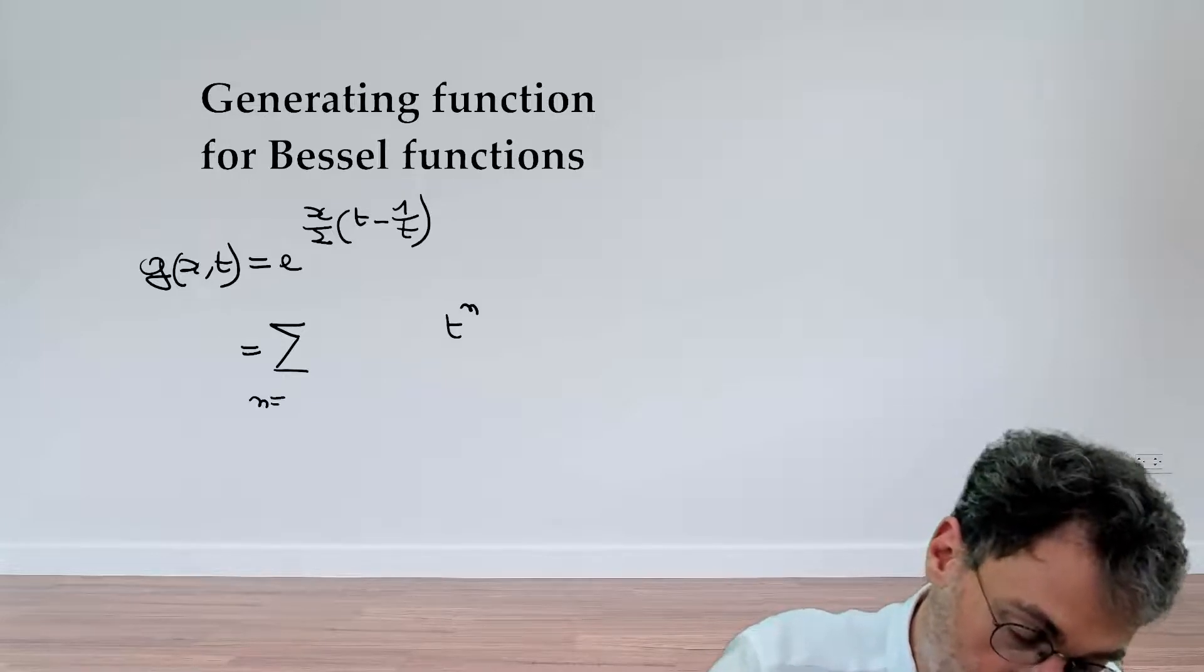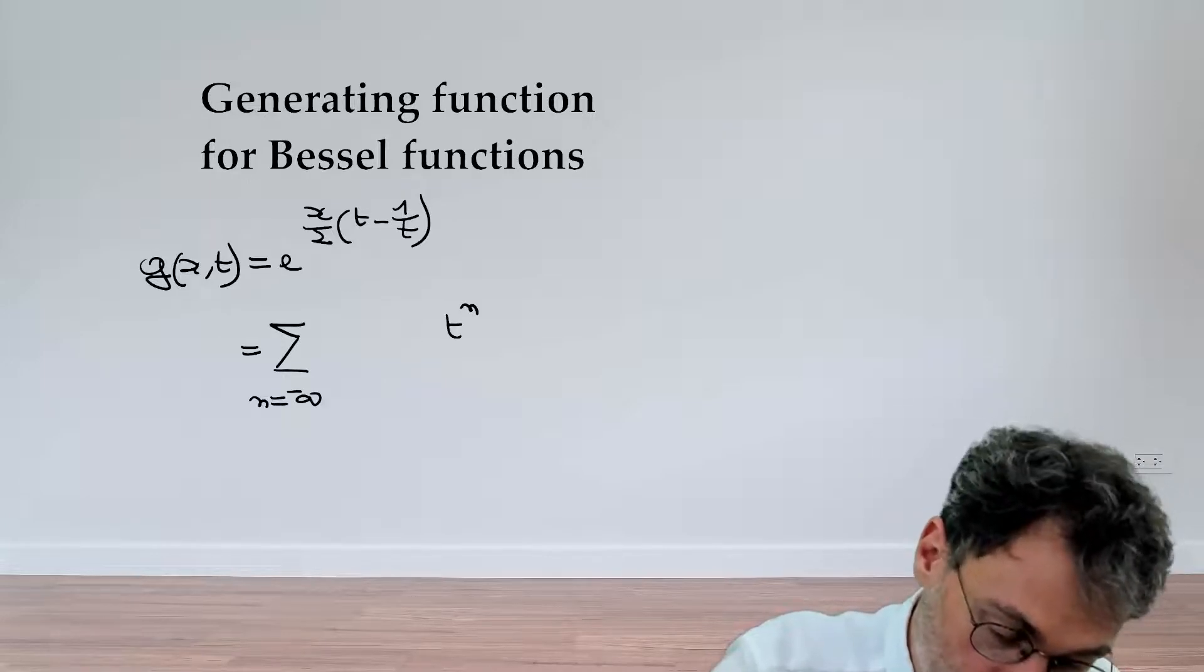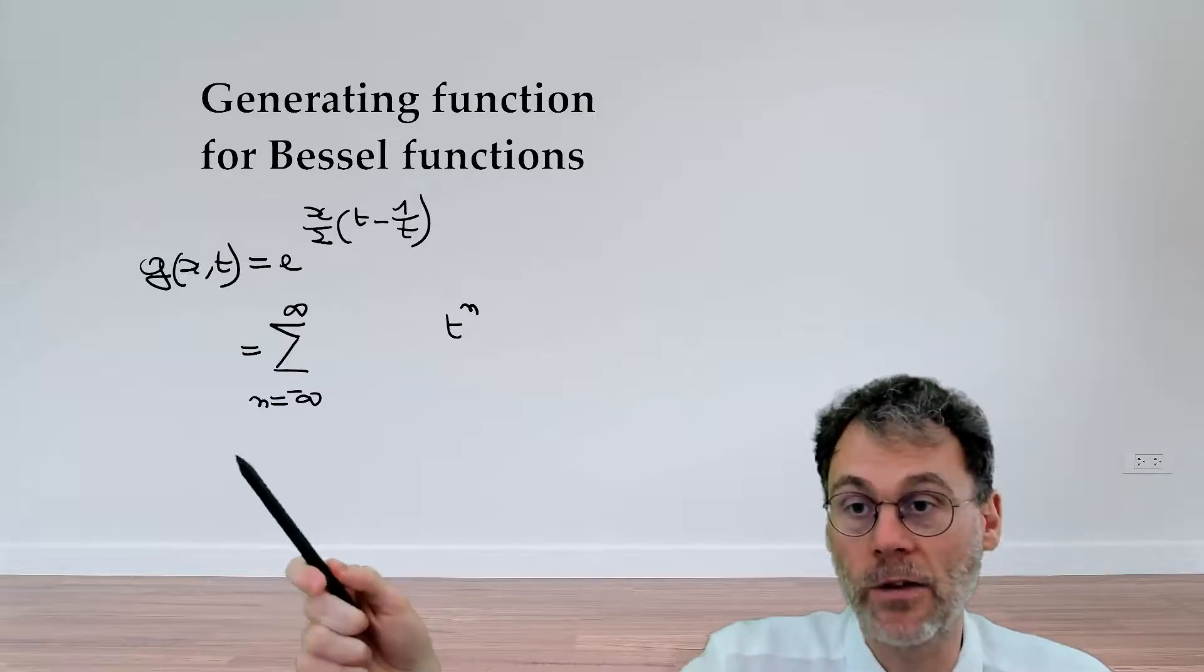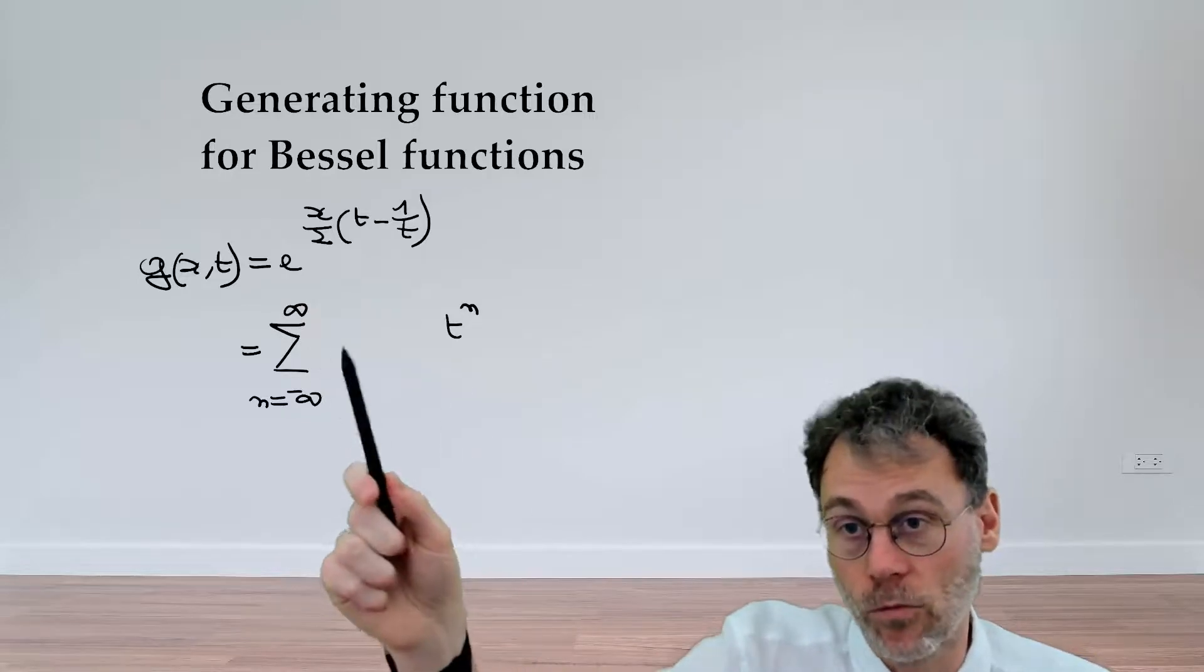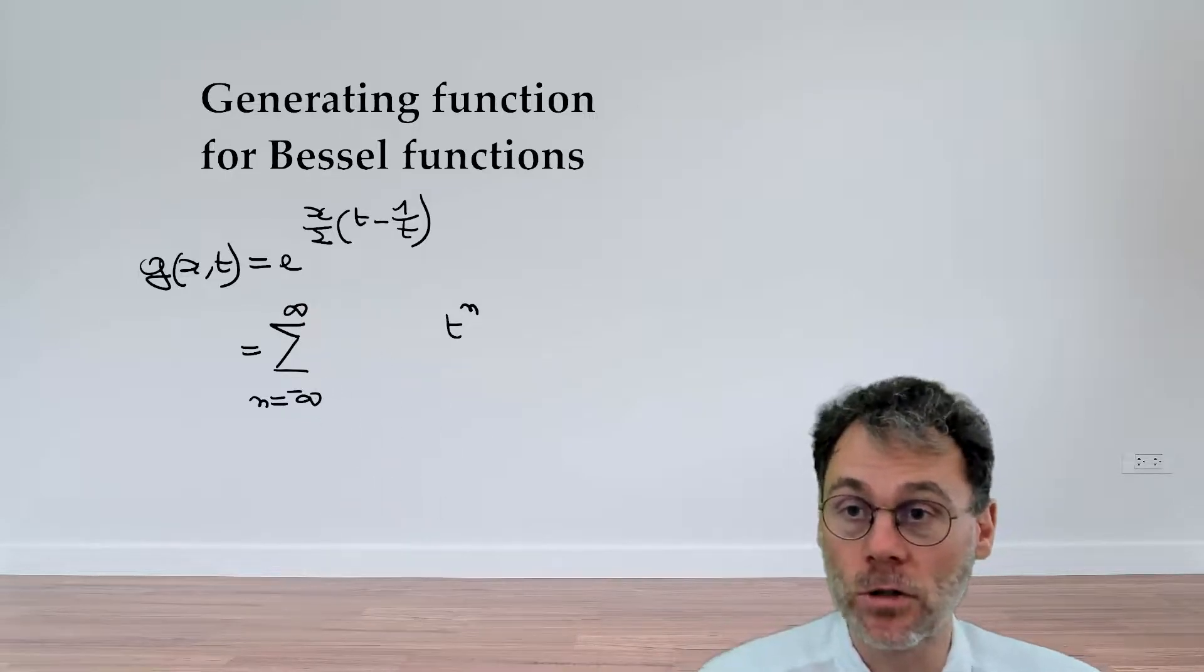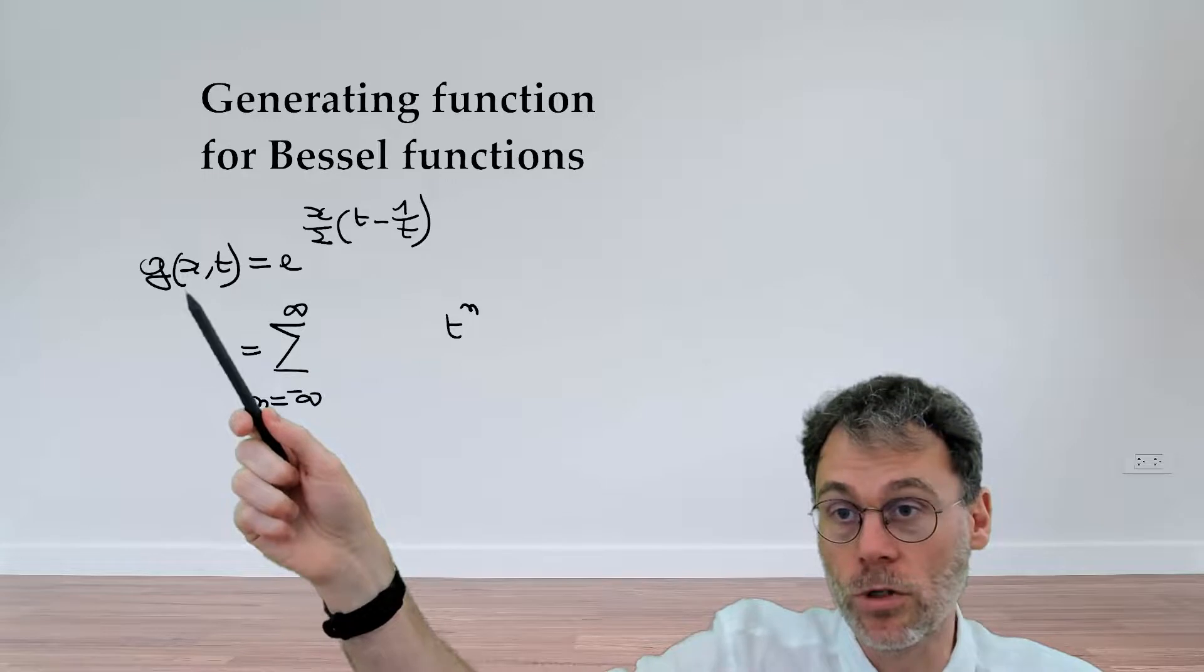Now we have a function of x and t. One thing we could do is just for fun expand this function in a Laurent series with powers of t, so t to the power of n going from minus infinity to plus infinity. We will have negative powers of t here because of this singularity over here.